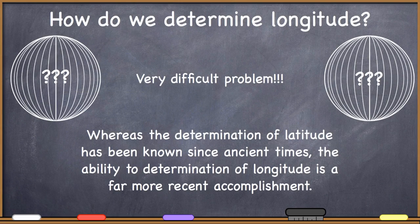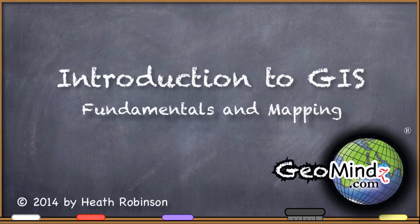Well, how are we going to determine longitude? It's actually a very difficult problem. Whereas the determination of latitude has been known since ancient times, just by using observations of the sun and a protractor, well, the ability to determine longitude has been a far more recent accomplishment. So let's take a look at how we can determine our longitude.